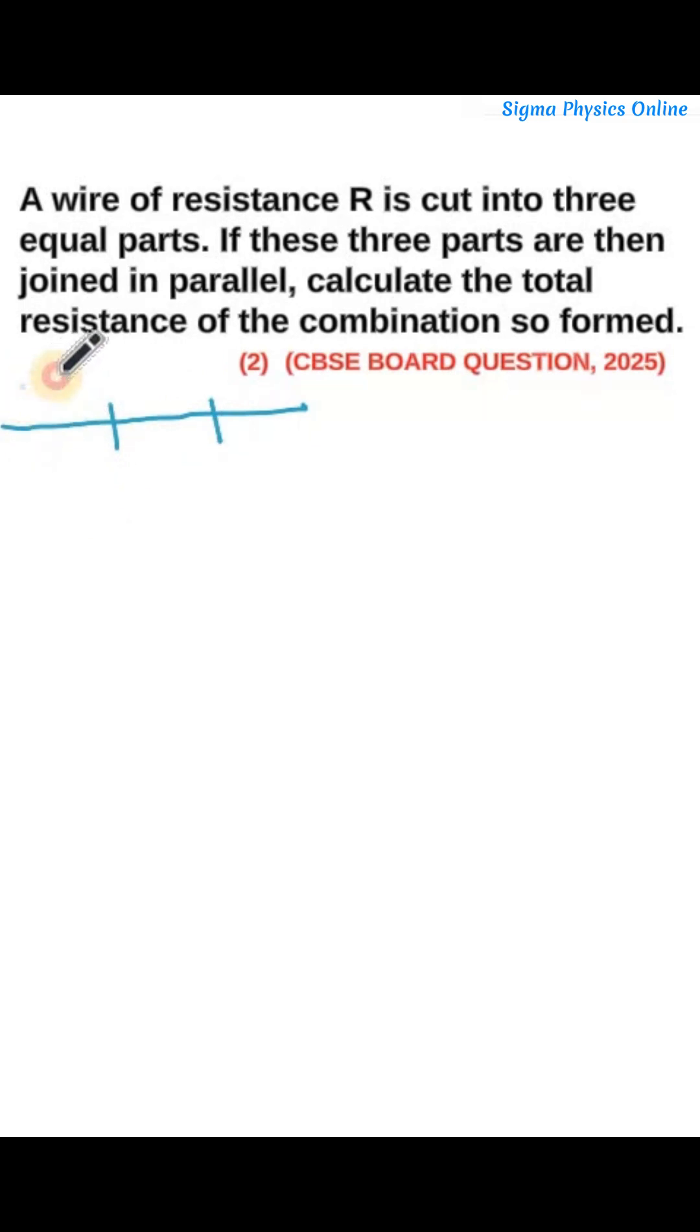It is cut into three equal parts. Now the resistance of each part becomes R by 3, R by 3, and R by 3. Now these three are connected in parallel, so the resistance of each of these three parts is R by 3.